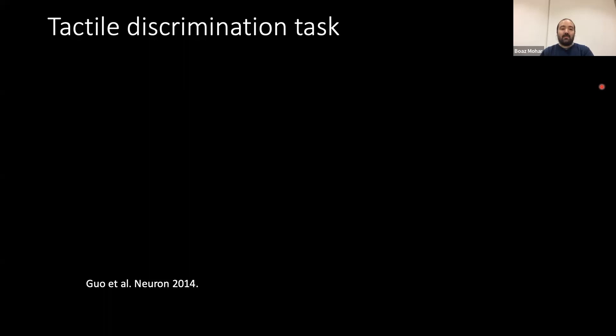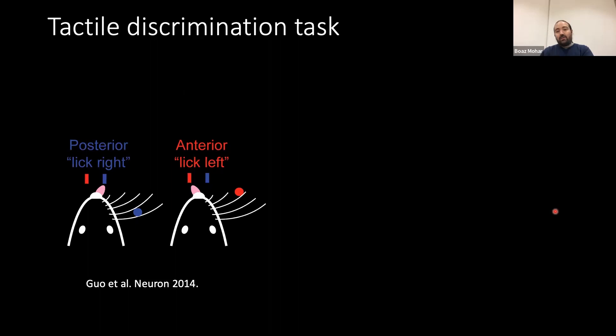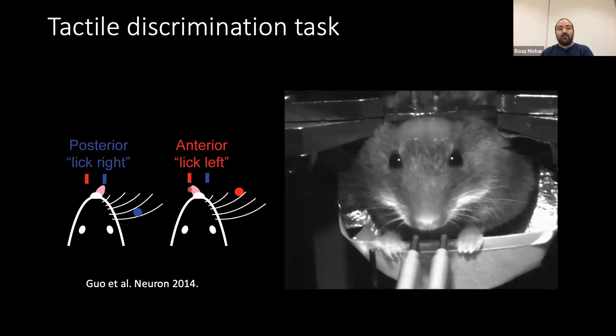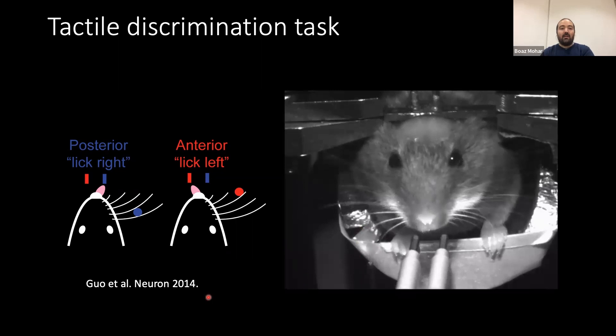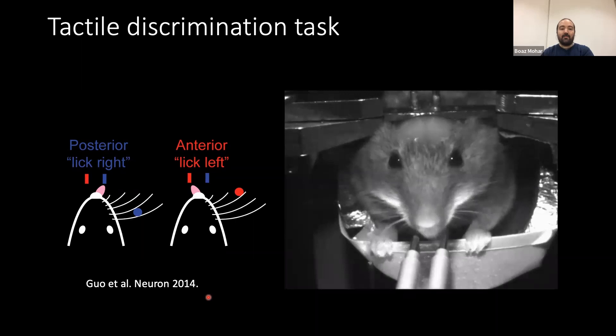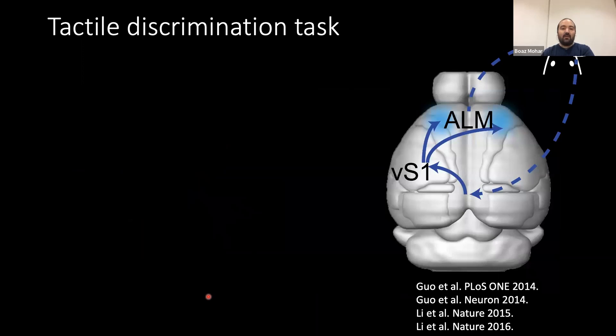On the completely other side of the spatial and temporal scales, what we're interested in is how these neurons integrate their inputs, specifically when the network they're in is engaged in controlling the behavior of the entire animal. And that happens at the timescales of seconds to weeks. And so in this lab, we've accumulated a lot of knowledge about a simple tactile discrimination task in which a pole is presented to a mouse and it needs to use its whiskers to report the position of that pole. And so if the pole is in the posterior position, the animal needs to lick to the right to get a water reward. And if the pole is in the anterior position, the animal needs to lick left. And here's a movie of a mouse performing this behavior. You can see the whiskers moving up and down.